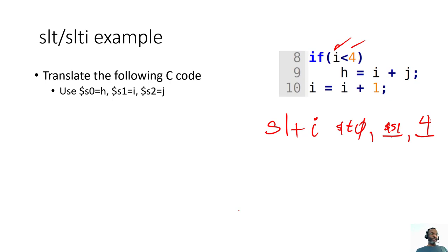Now, if it is true that i is less than 4, then we want to go ahead and do this addition. So how do I know if it's true? Well, I'm going to have to look at 0, or t0 rather. So generally with a set on less than immediate, you will need a branch that's associated with it.